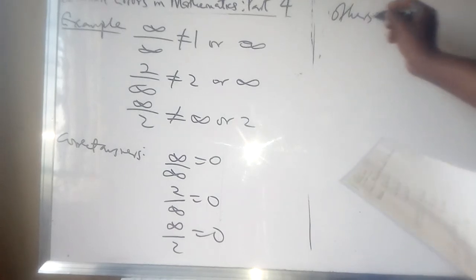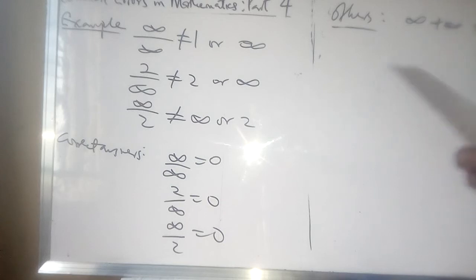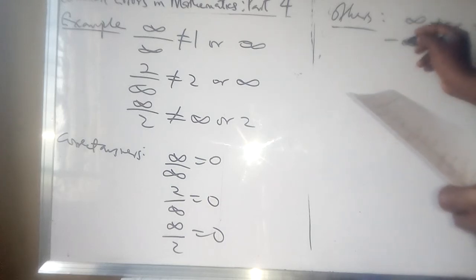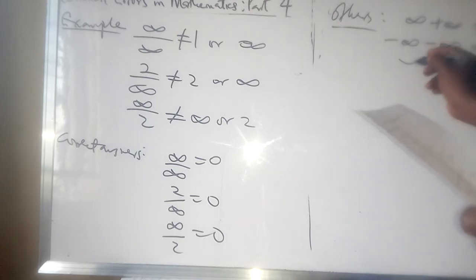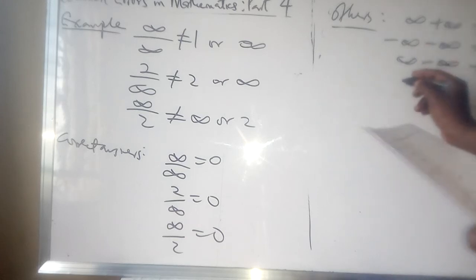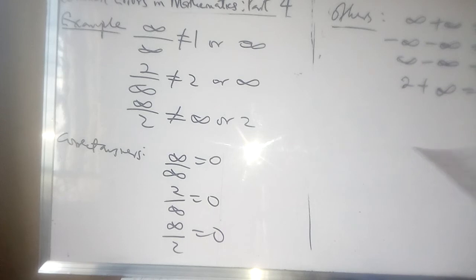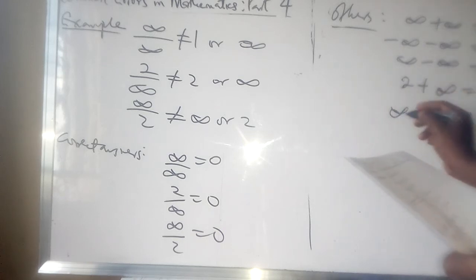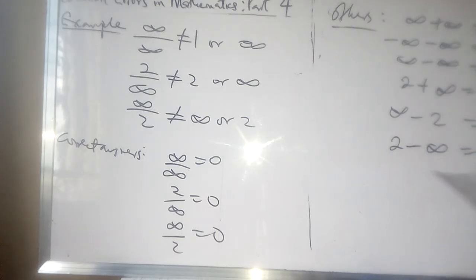Other correct results we should note: infinity plus infinity is equal to infinity — it's not 2 infinity, please make sure you take note of that. Infinity minus infinity is equal to 0. 2 plus infinity is equal to infinity. Infinity minus 2 is equal to infinity. And 2 minus infinity is equal to minus infinity.